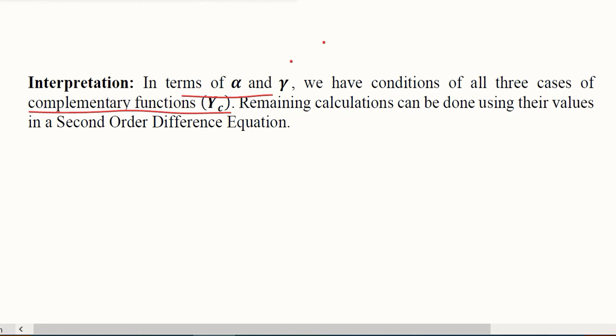What we can conclude from this solution is that in terms of alpha and gamma, if we have these values, we can come up with either of the cases of complementary function by examining the nature of its roots: distinct real root, equal real root, or complex roots. Then we can solve it and get the overall solution, that is the time path of the multiplier accelerator model. Now we have all the information that we need to solve, and we are going to do a numerical of this in the next video. Thanks.